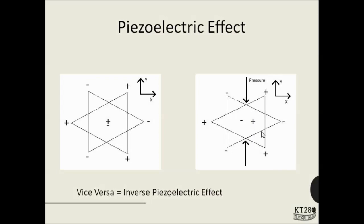This dipole can be used to power electric circuits, but we are not interested in that. We are interested in producing ultrasonic waves, so we are going to use the inverse piezoelectric effect. Instead of applying pressure and producing a potential difference, we are going to apply a potential difference and cause a strain in the crystal. As we apply alternating voltage across the crystal, the crystal will start contracting and elongating, and this alternate contraction and elongation will be used to produce ultrasound.